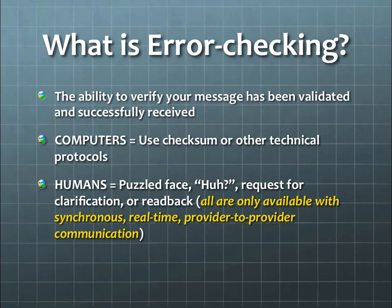So what is error checking? Error checking is the ability to verify that your message has been validated and successfully received on the other side. Computers do this using technical tools like checksums and other technical protocols to help ensure the correct transmission and receipt of information. Human beings don't have those technical tools, but we've evolved certain social etiquettes such as the puzzled face, the 'huh,' requests for clarification, or even a verbal readback that's commonly used in clinical settings. But all of these are only available with synchronous, real-time, provider-to-provider communication.